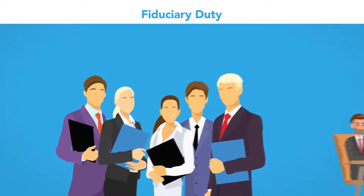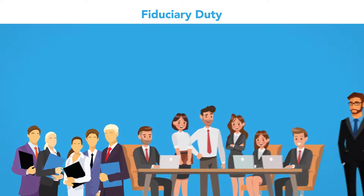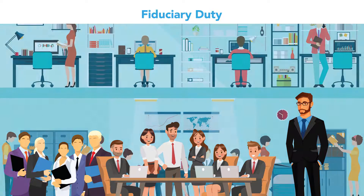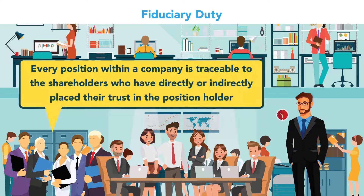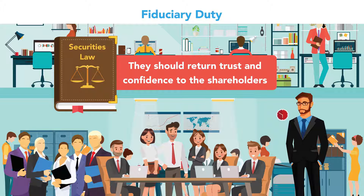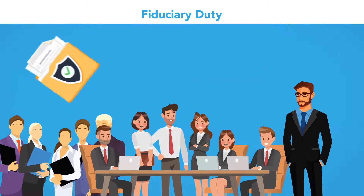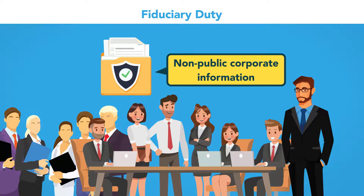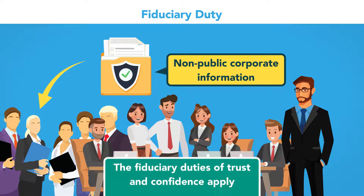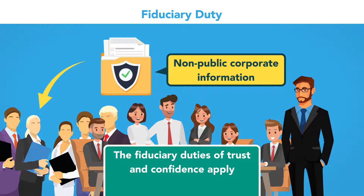Consider that shareholders elect the board of directors, directors hire the CEO, the CEO hires the next-level managers, and so on. Every position within a company is traceable to the shareholders who have directly or indirectly placed their trust in the position holder. Therefore, the law posits that they should return trust and confidence to the shareholders. Because company directors, executives, and employees are in a position to access non-public corporate information solely by virtue of the positions bestowed upon them by the shareholders, the fiduciary duties of trust and confidence apply.